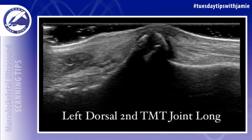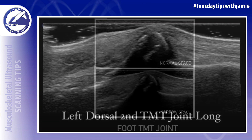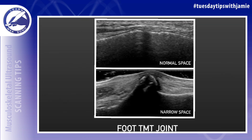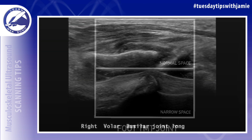Here's an example of a more severe case of joint space narrowing. This is a little bit further proximal in the foot at the second TMT joint. You can see the normal space on the top versus one with joint space narrowing on the bottom.